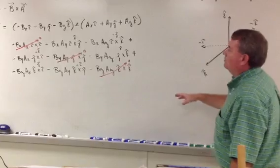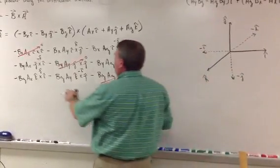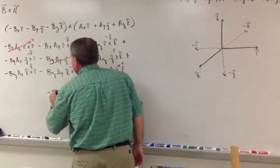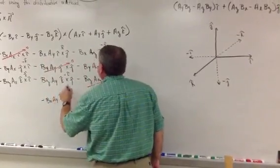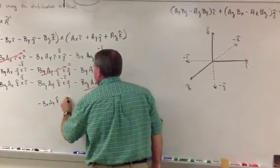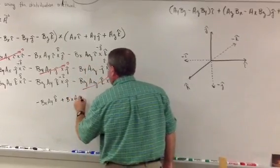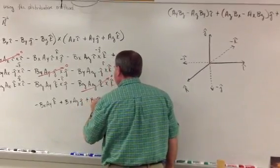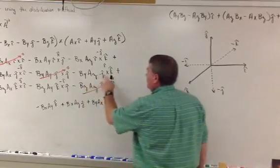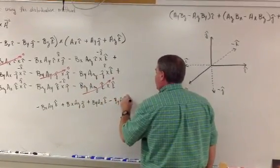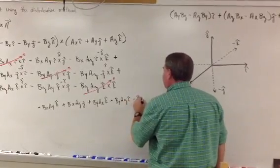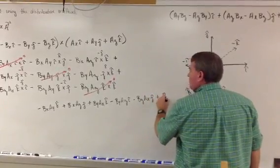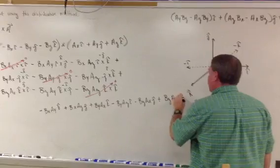Now we can simplify, getting rid of the zero terms and crossing out the negative signs where they cancel. This gives: negative bx·ay k, then negative times negative gives plus bx·az j; plus by·ax k; minus by·az i; minus bz·ax j; plus bz·ay i.